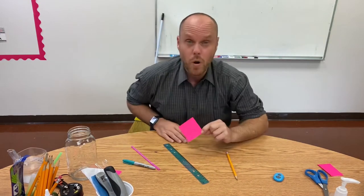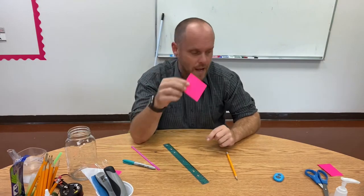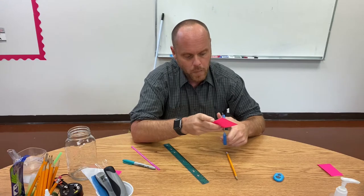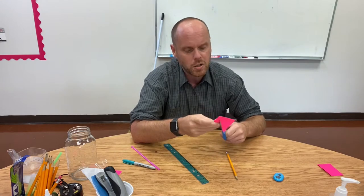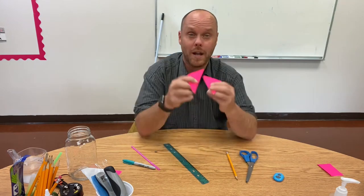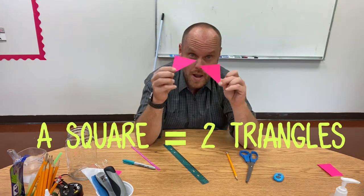You're going to want to draw a diagonal line and then take your scissors and cut it. The cool thing about this is when you cut a square diagonally, you get two brand new shapes. You get two triangles.